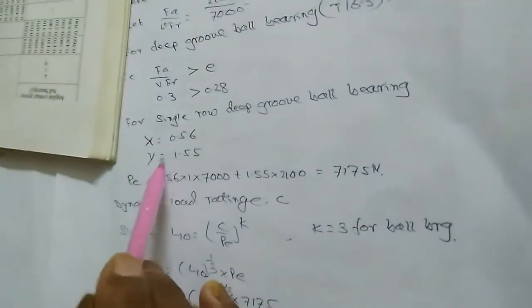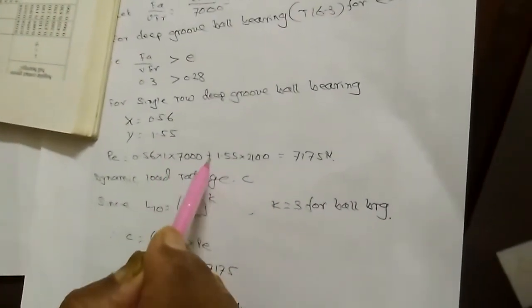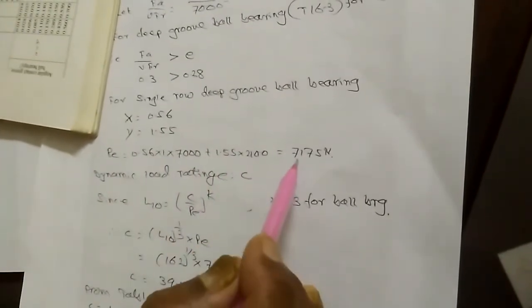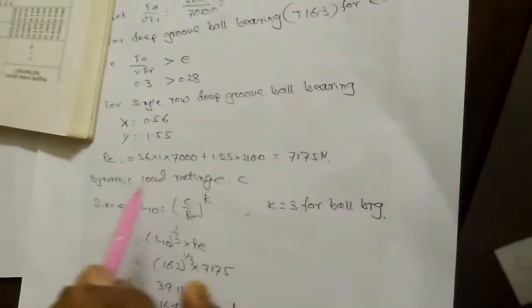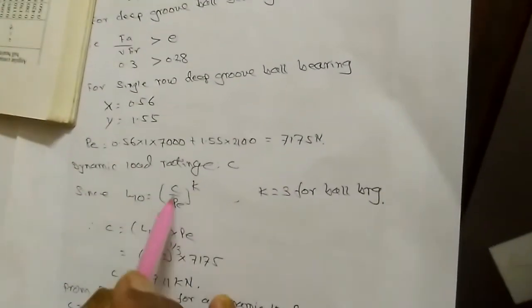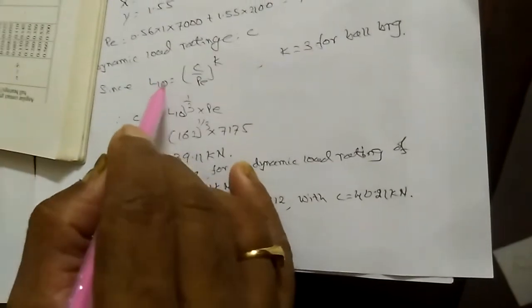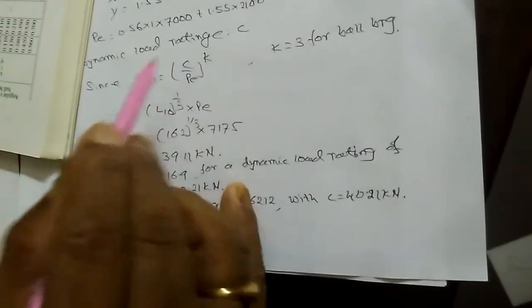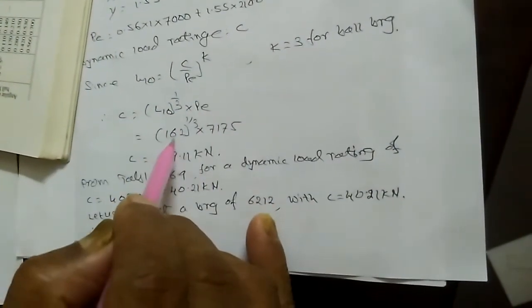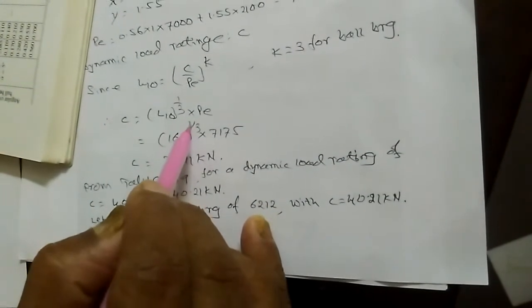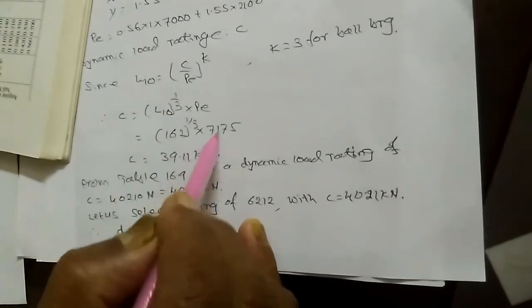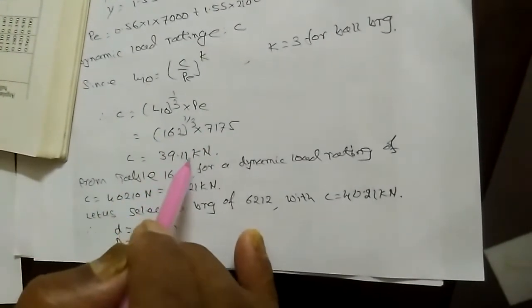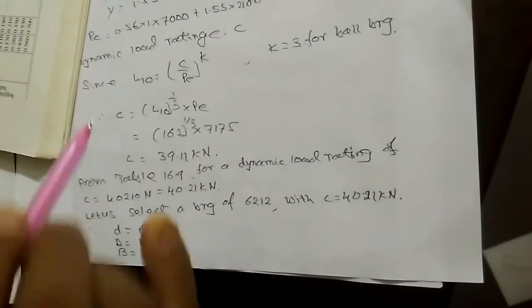With X = 0.56 and Y = 1.55, substituting into PE = X·V·FR + Y·FA gives PE = 7175 N. Using the dynamic load rating equation L10 = (C/PE)^3 for ball bearings, rearranging gives C = L10^(1/3) × PE = 162^(1/3) × 7175 = 39.11 kN. This is the required basic dynamic load rating for 1 million revolutions.